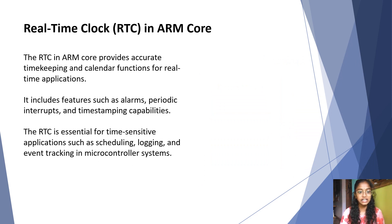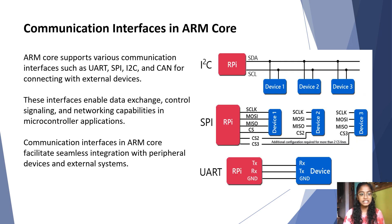The real-time clock in ARM core provides accurate timekeeping and calendar functions for real-time applications. It includes features such as alarms, periodic interrupts, and time-stamping capability.